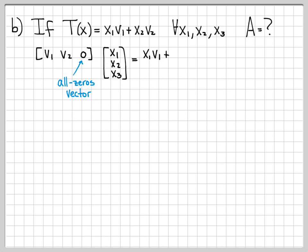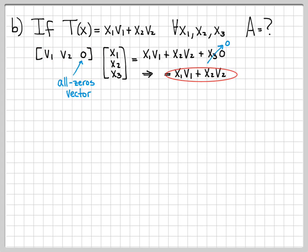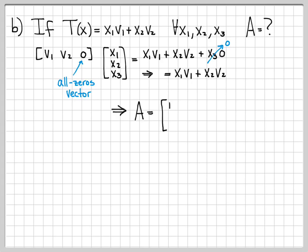If we multiply this A by x, we get x1·v1 + x2·v2 + x3·(zero vector), and since x3 times the zero vector is zero, this reduces to x1·v1 + x2·v2, which is exactly what we wanted. So for this example, A = [v1 | v2 | 0], and if we plug in specific values, the third column would be all zeros.